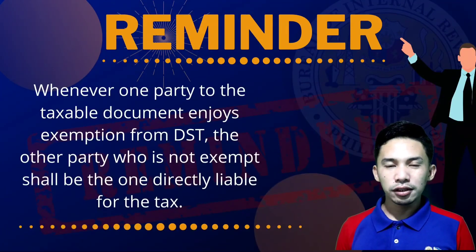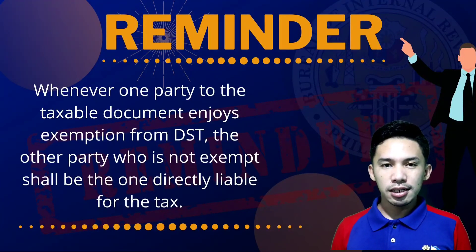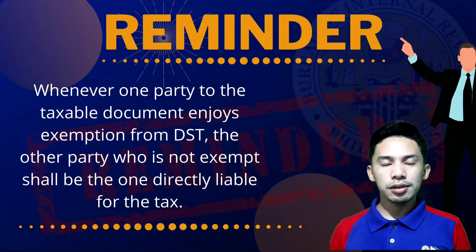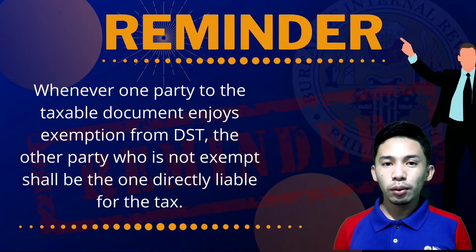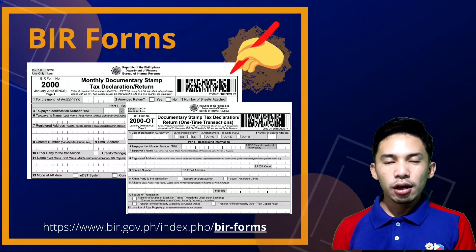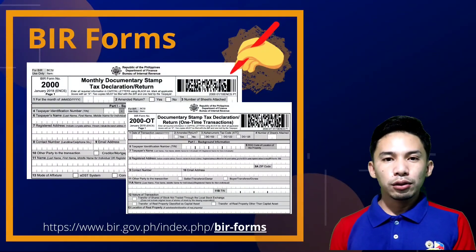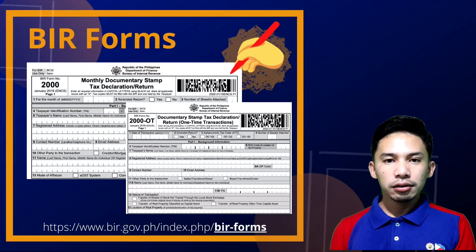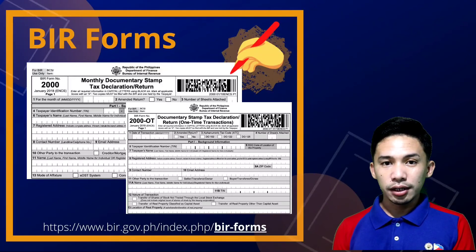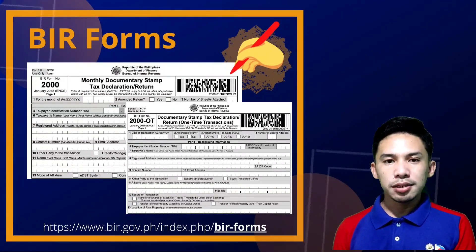Another thing to take note is that whenever one party to the taxable document enjoys exemption from DST, the other party who is not exempt shall be the one directly liable for the tax. As to BIR forms, we have two types of DST forms: BIR Form 2000, which is used for regular DST transactions, and BIR Form 2000-OT, which is intended for one-time transactions. These forms can be accessed at the BIR official website.